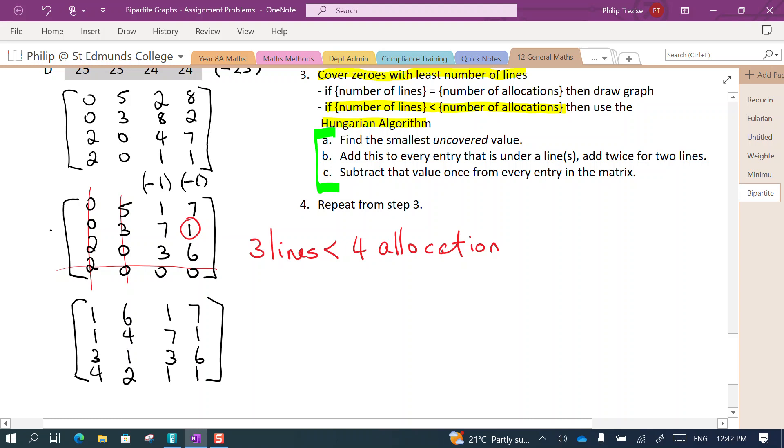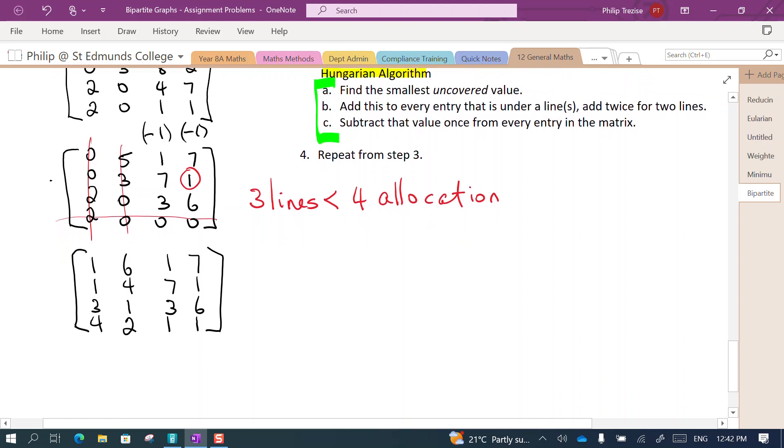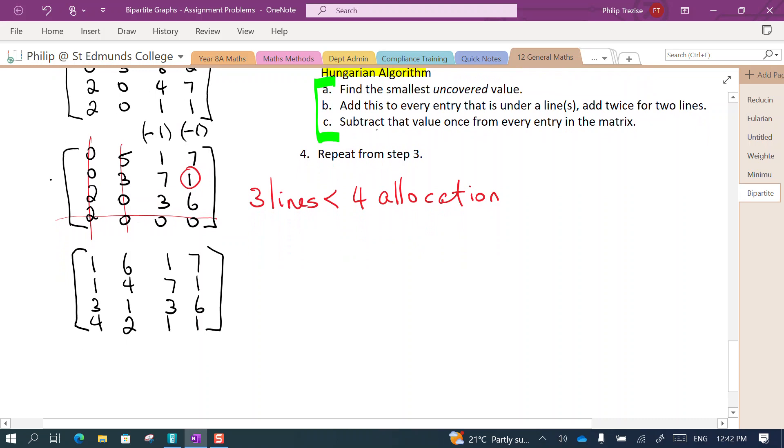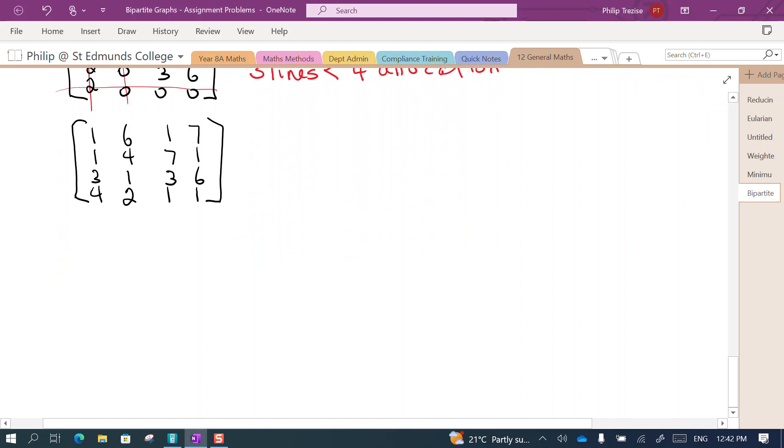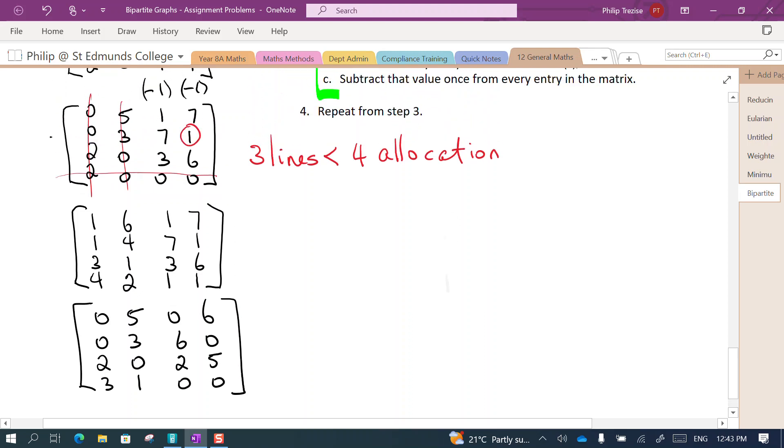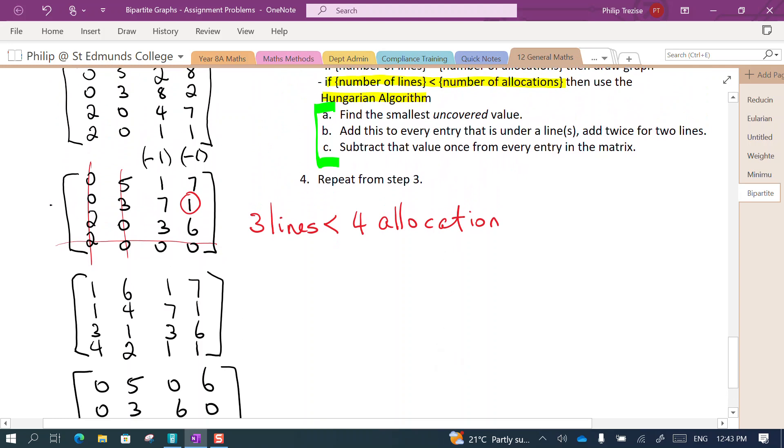The third step is quite easy. I subtract the value, the value of one, from everything in the matrix. So I'll go 0 5 0 6, 0 3 6 0, 2 0 2 5, 3 0 0. So that's the Hungarian algorithm and now it says repeat from step three.